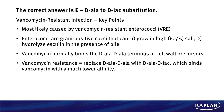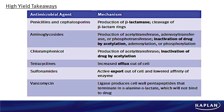Some high-yield takeaways: don't only know how vancomycin resistance develops — know about other antimicrobial agents and how resistance develops to them. With penicillins and cephalosporins, organisms produce beta-lactamase and cleave the beta-lactam rings. With aminoglycosides, think acetylation. With chloramphenicol, also acetylation. With tetracyclines, the drug is effluxed out of the cell. With sulfonamides, it's also export out of the cell. A lot of pharmacology questions — it's stuff every up-and-coming doctor has to know to take care of their patients.